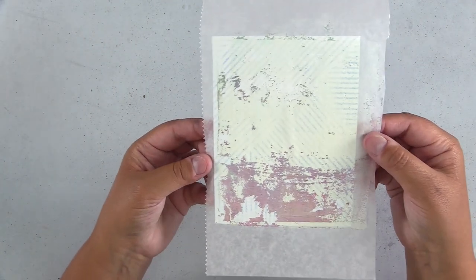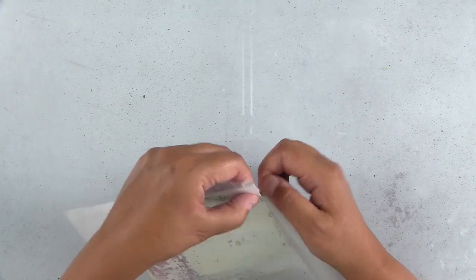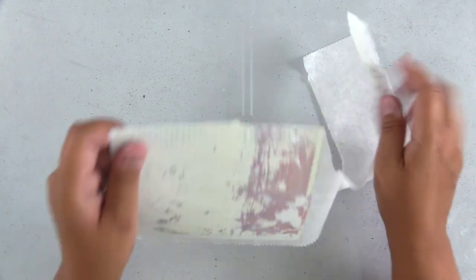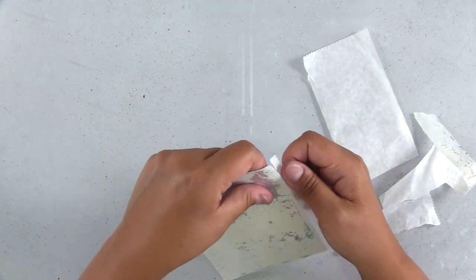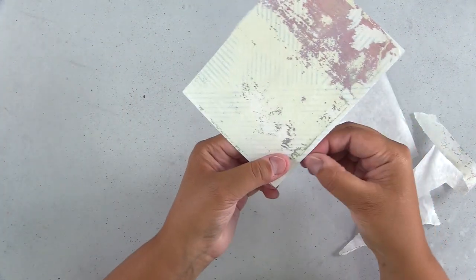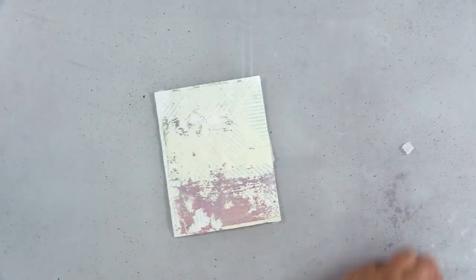So I'll just press that on. I'm just going to smooth it down with my fingers, but you could also use a teflon bone folder if you want to flip it over and just run your bone folder across the back, and then I'll go ahead and tear off the excess. Of course you can trim it on your paper trimmer, but I like the jagged edge that you get when you tear the paper. If you're enjoying this video, be sure to like and subscribe.